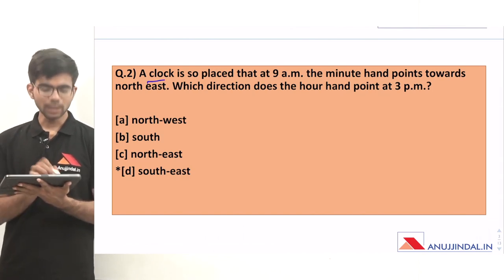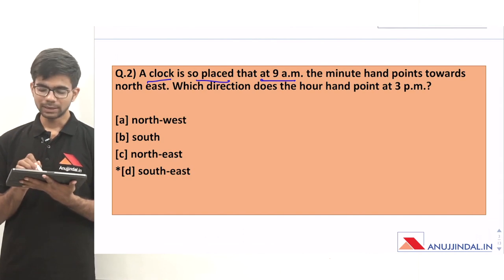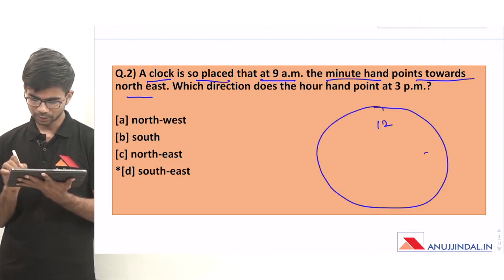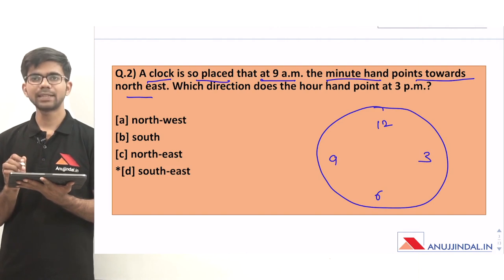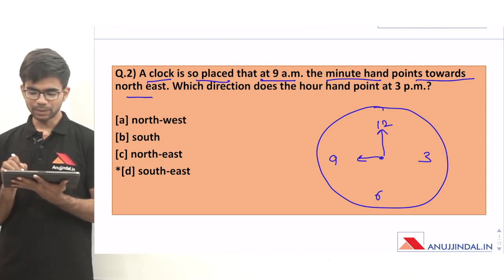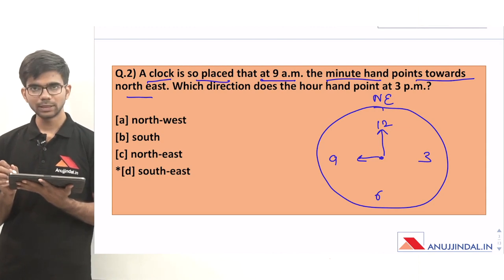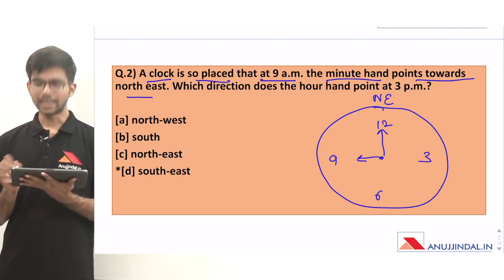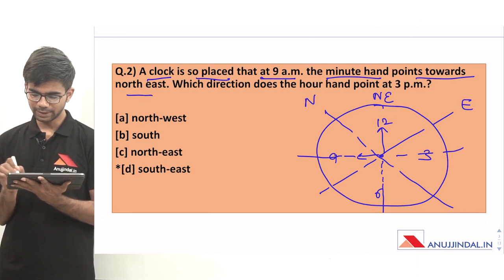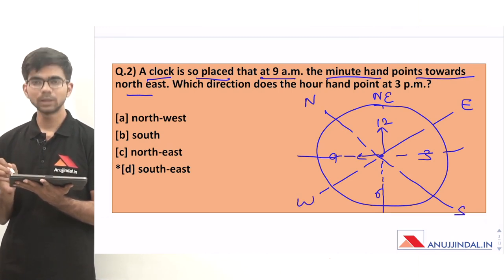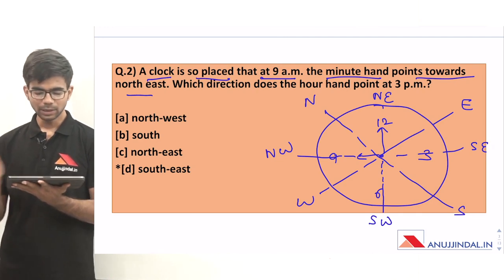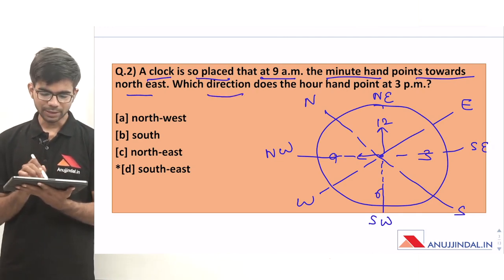Question 2: A clock is so placed that at 9 am the minute hand points toward north east. Drawing a clock with 12, 3, 6, and 9 marked — at 9 am, the hour hand is at 9 and the minute hand is at 12, pointing towards north east. Working out the other directions: north east is at 12, north is above, east is to the right, west to the left, south is below, giving us north west, south east, and south west as well. The question asks which direction does the hour hand point at 3 pm.